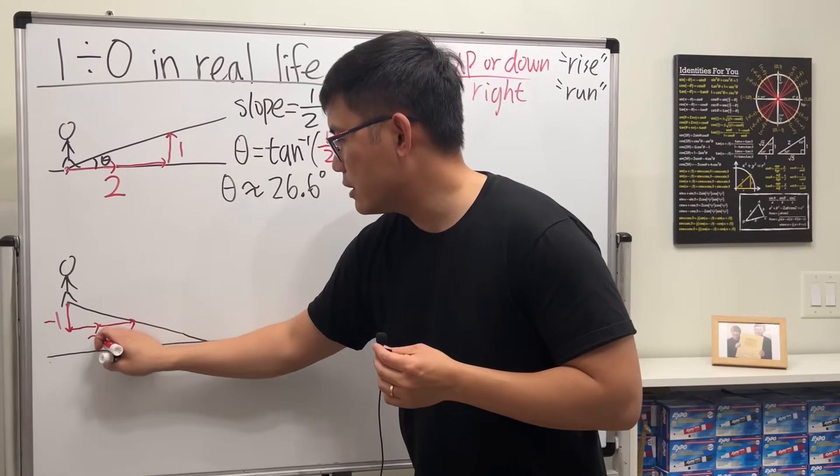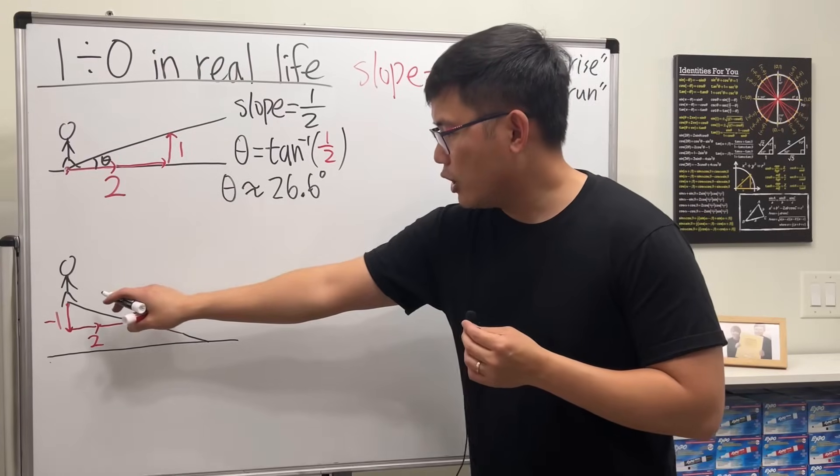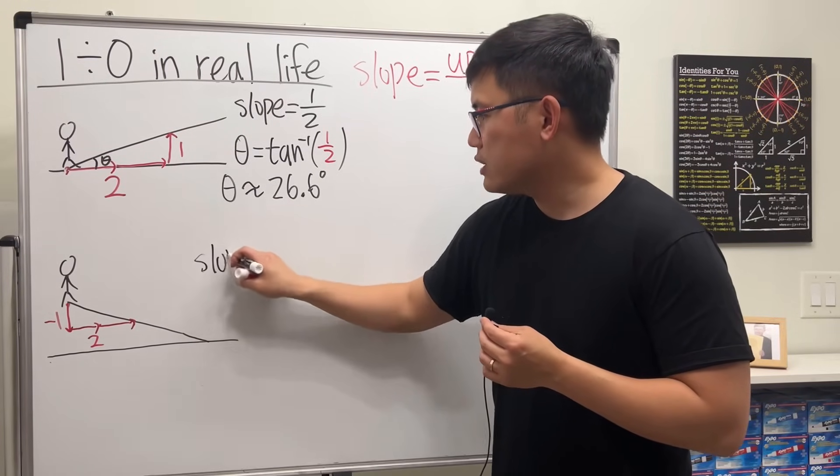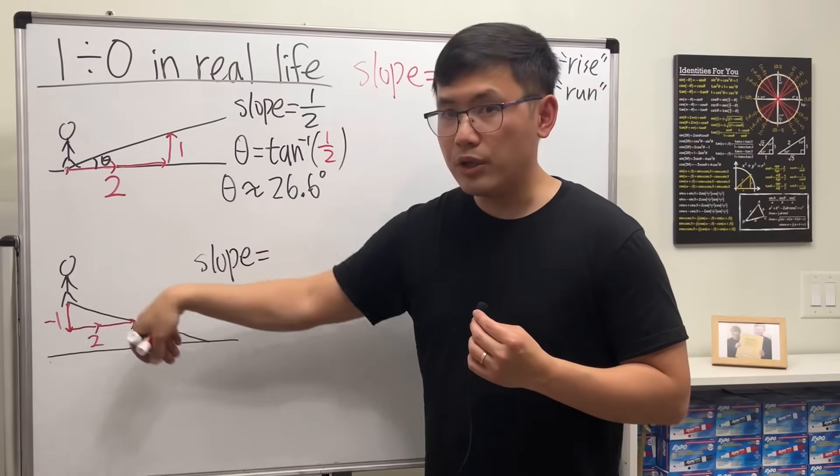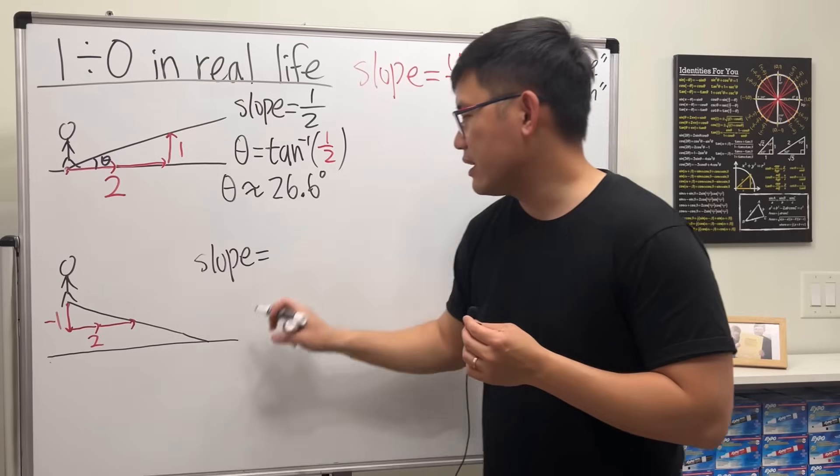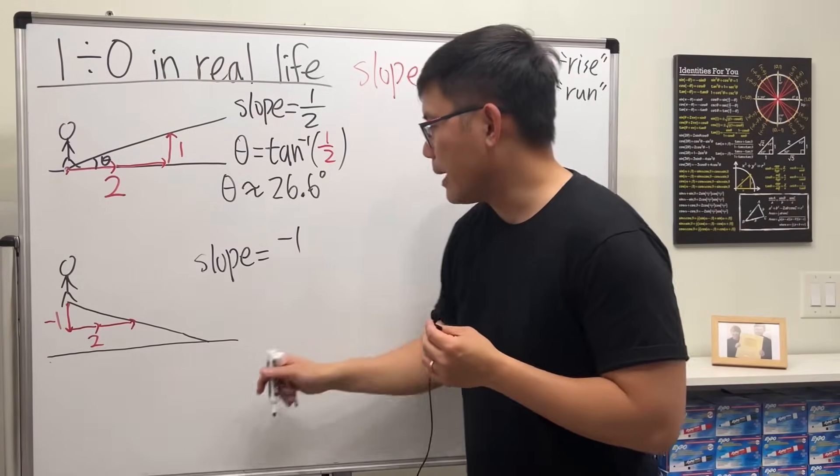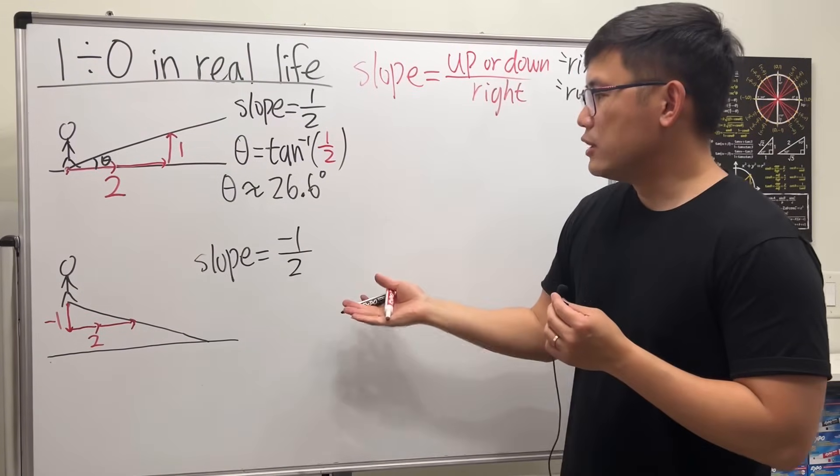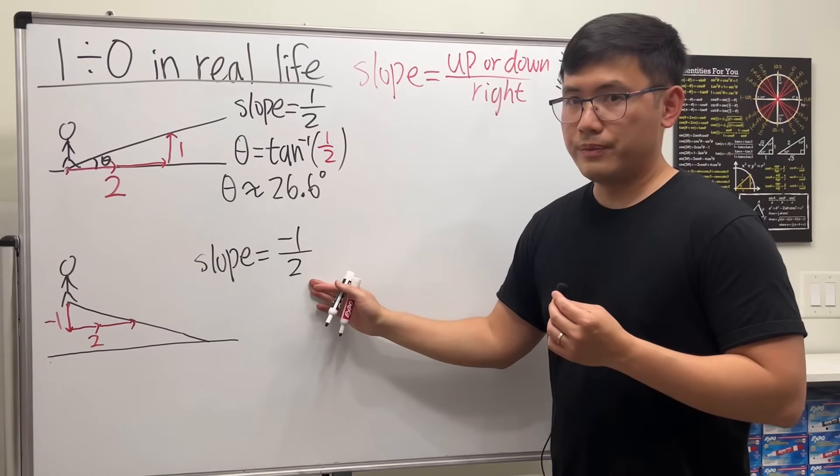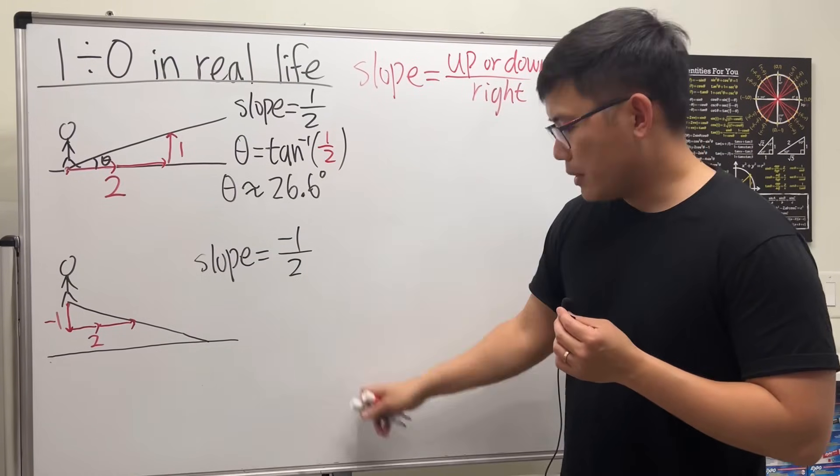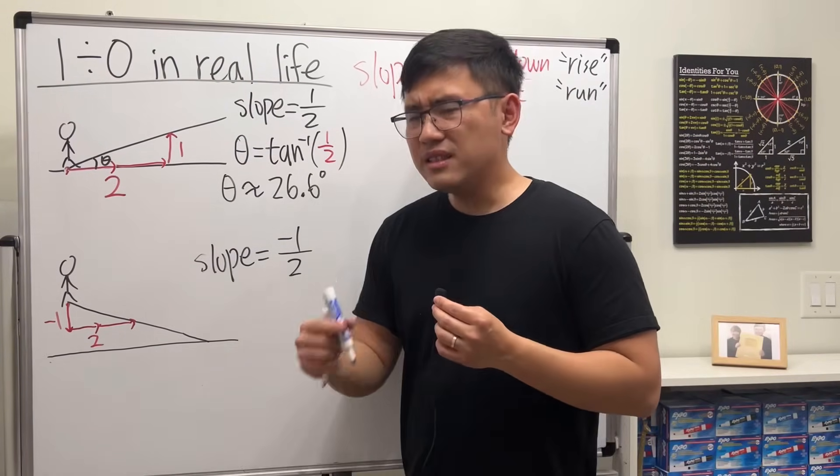We have the negative here which describes the downhill situation, divided by two. So the slope is negative one over two. If you want to talk about the angle theta in this case, it will be more suitable to talk about it like this - here is the angle theta. In fact, this angle and that angle are equal.